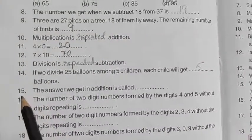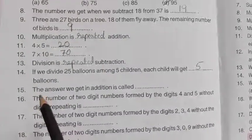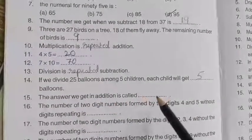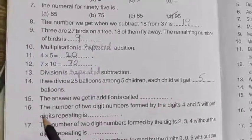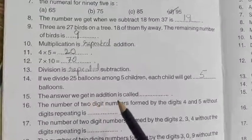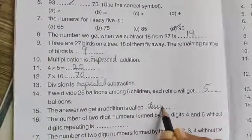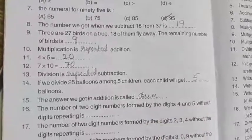Now come to question number 15. The answer we get in addition is called dash. What do we call for that? The answer we get in addition is called sum, S-U-M, sum. Okay, yes.